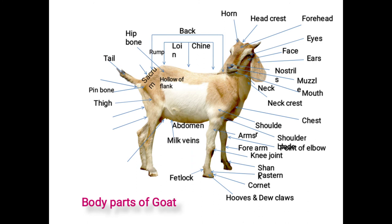Then the milk vein: a prominent zigzag vein starting from the heel to the udder is called the milk vein, and the vein gets curved and bulged at the heel region with a depression called the milk well. Then the milk mirror: the portion situated between the vulva and rear udder called the milk mirror. Its wider size indicates a capacious udder, indicating high milk production capacity in cattle.